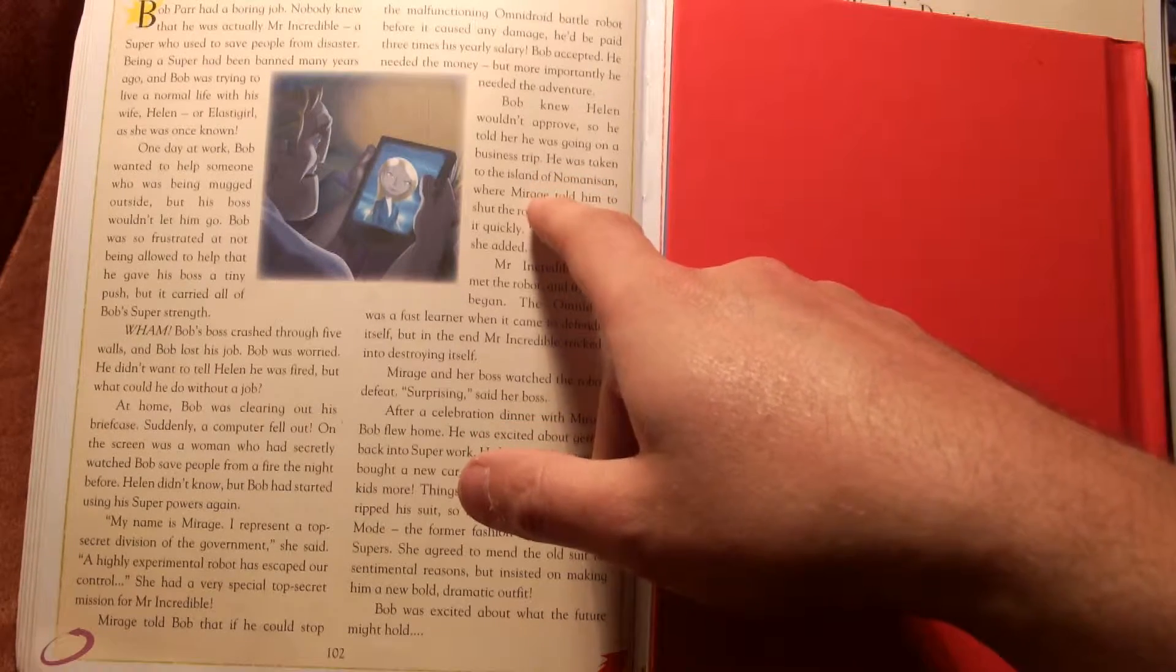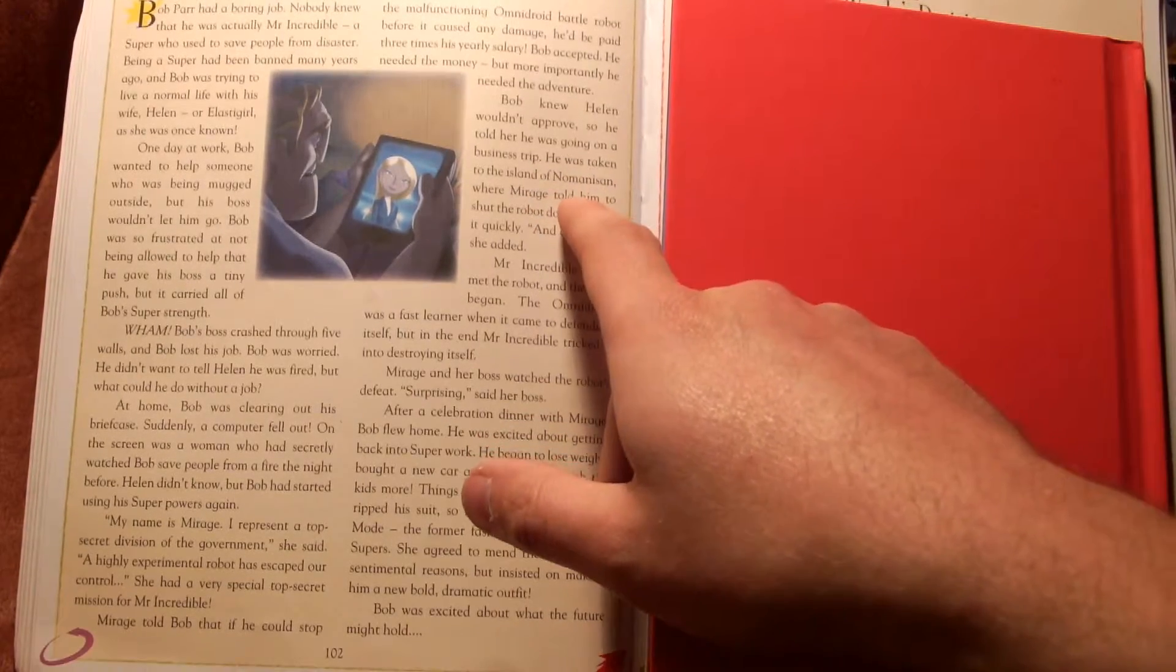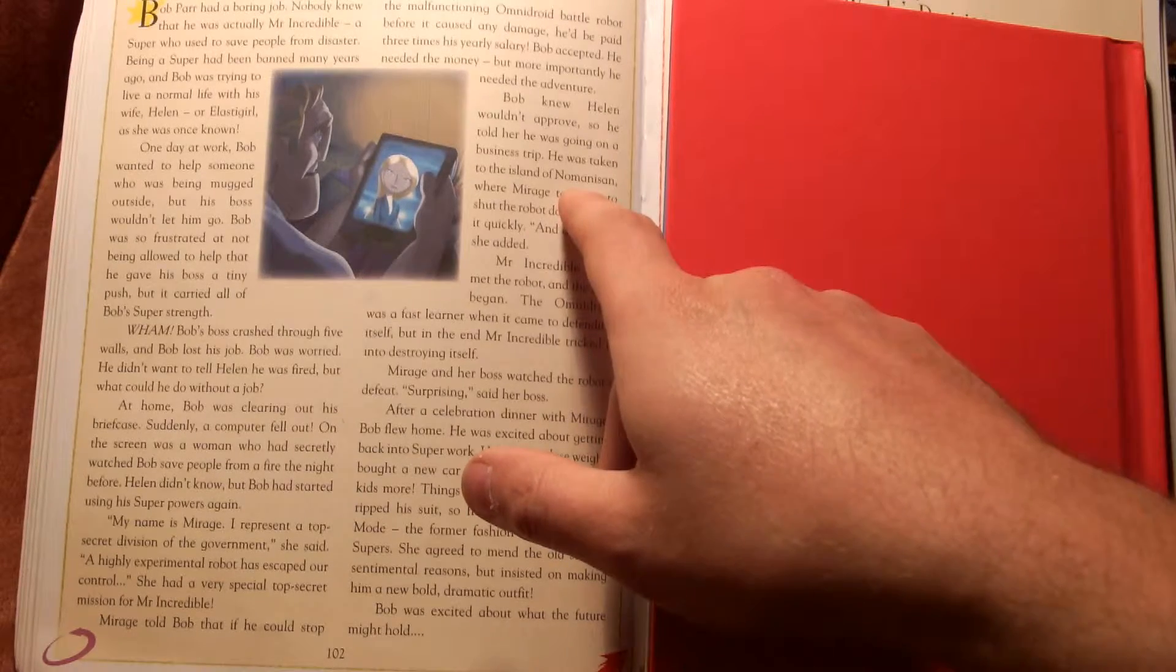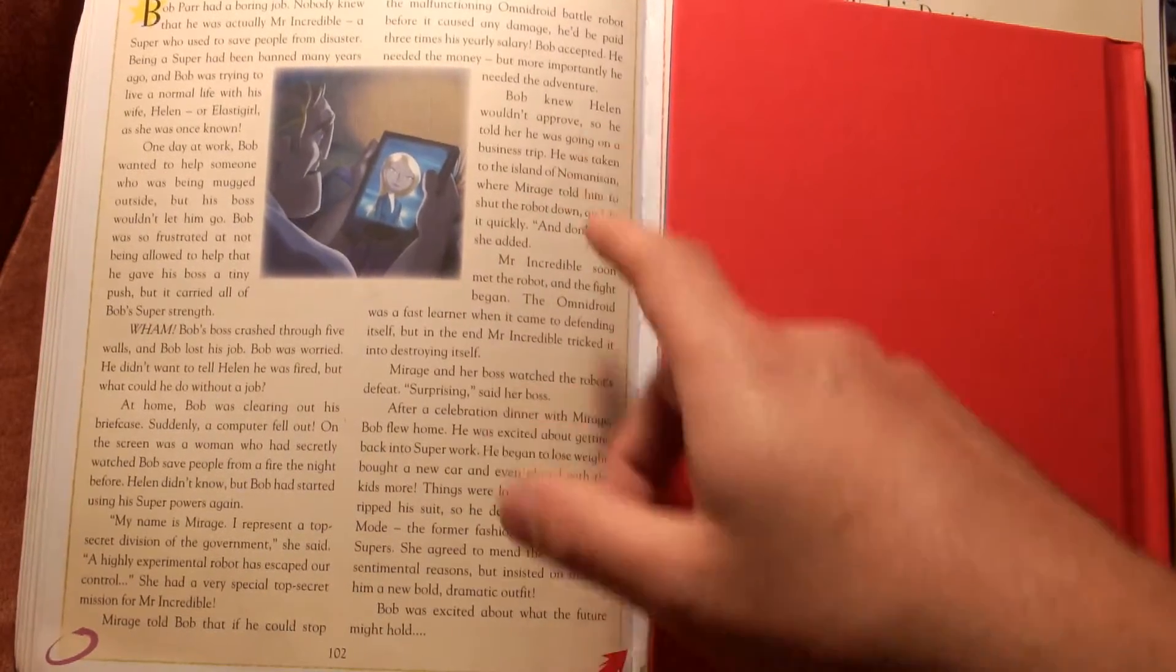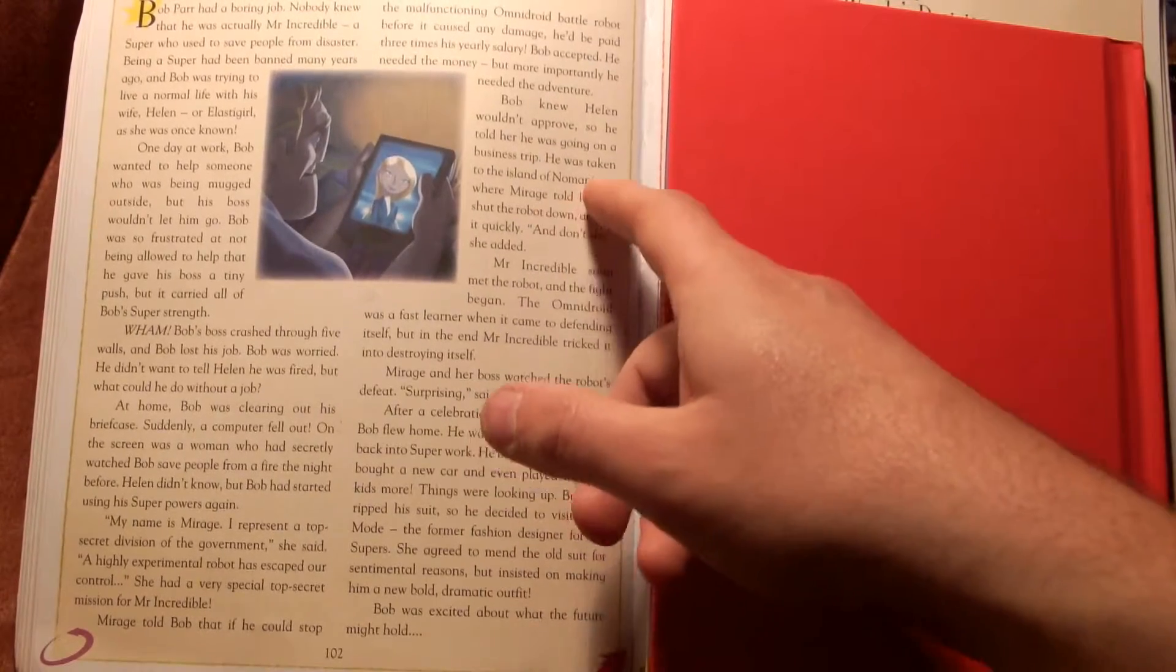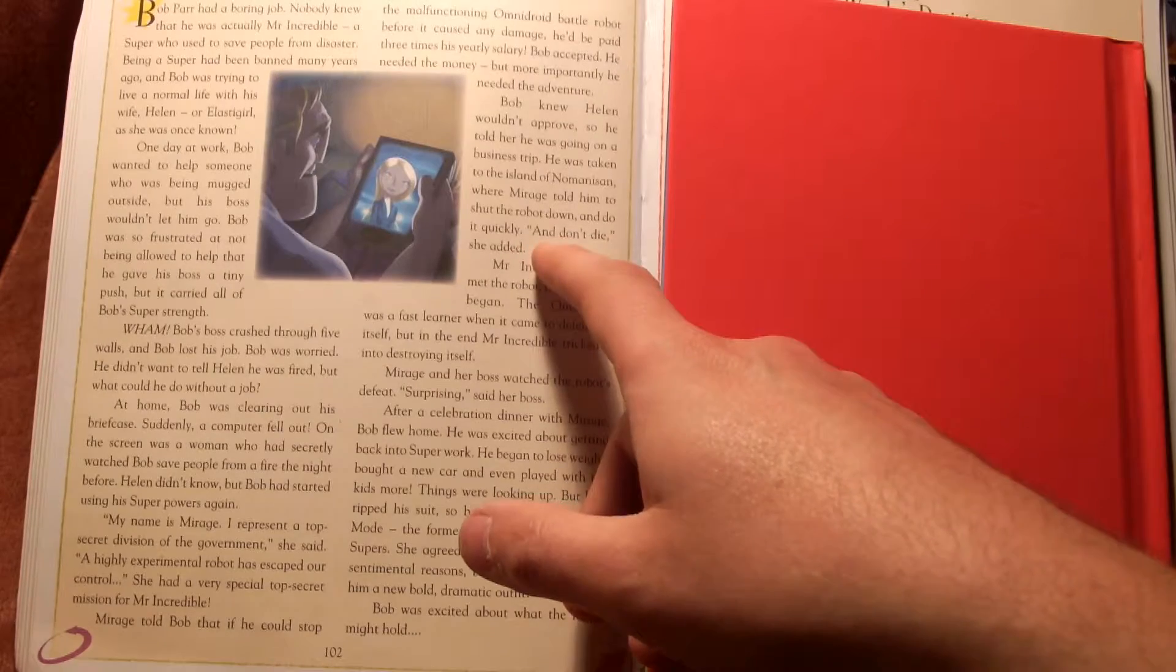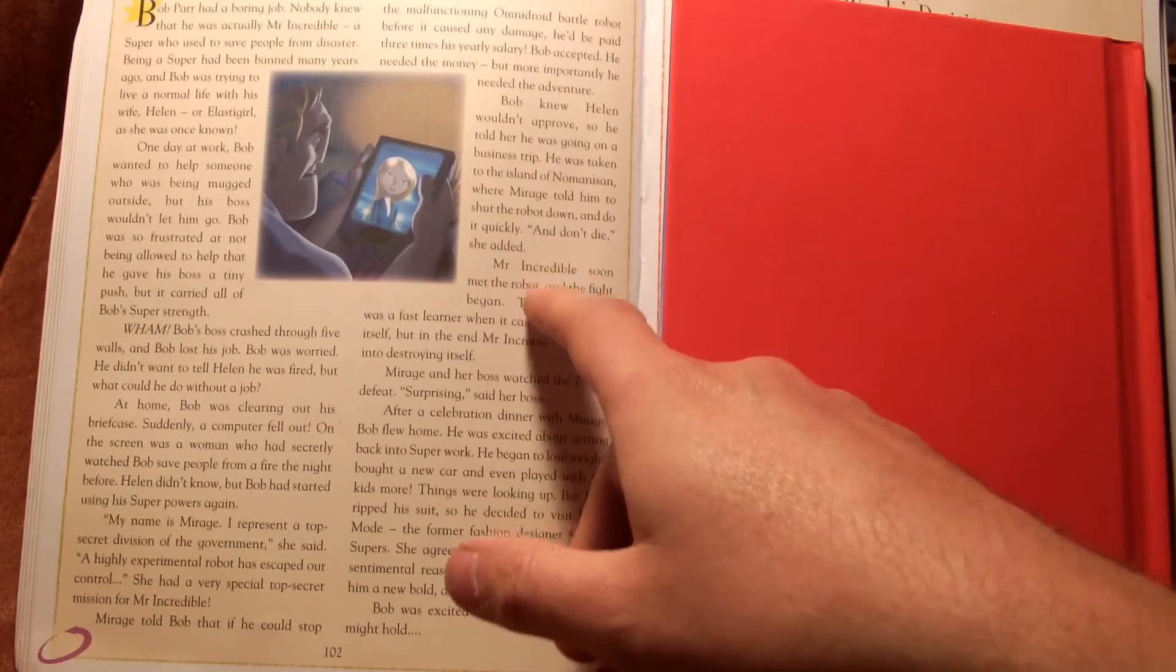He was taken to the island of Nomanisan. We've all seen the film about a thousand times. I don't know why I can't pronounce it. Nomanisan. Let's just call it that. Where Mirage told him to shut the robot down and do it quickly. And don't die, she added.